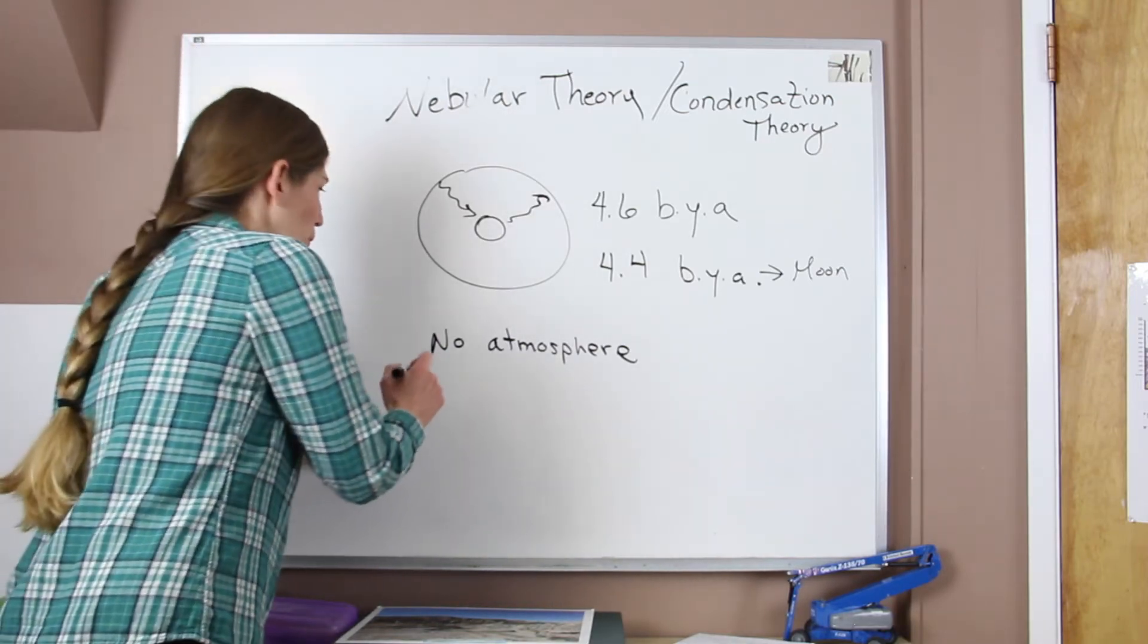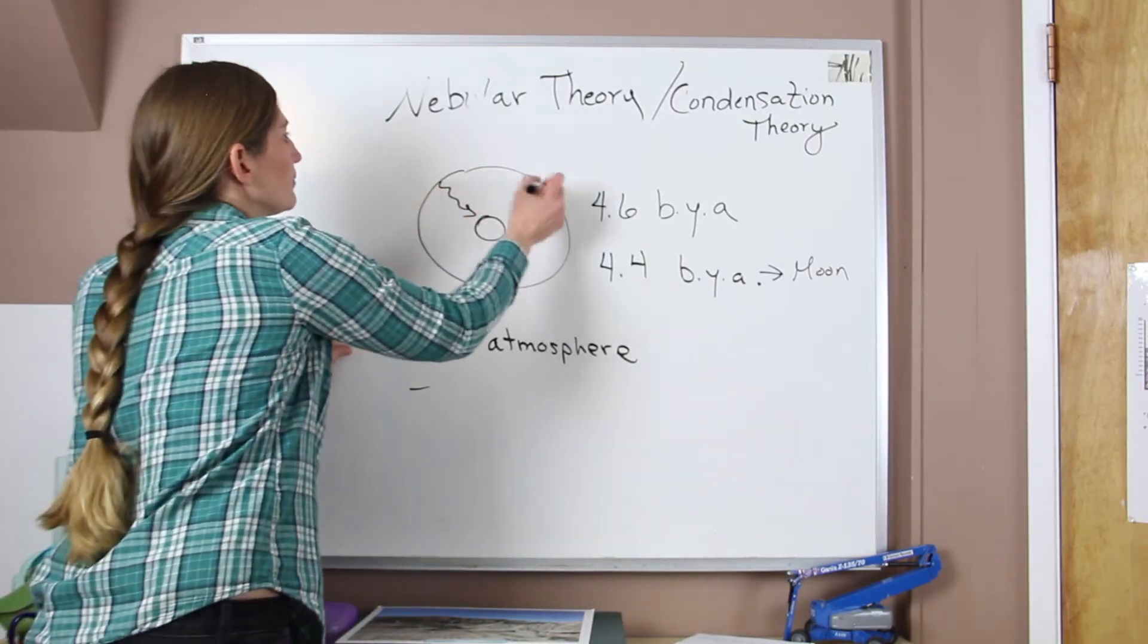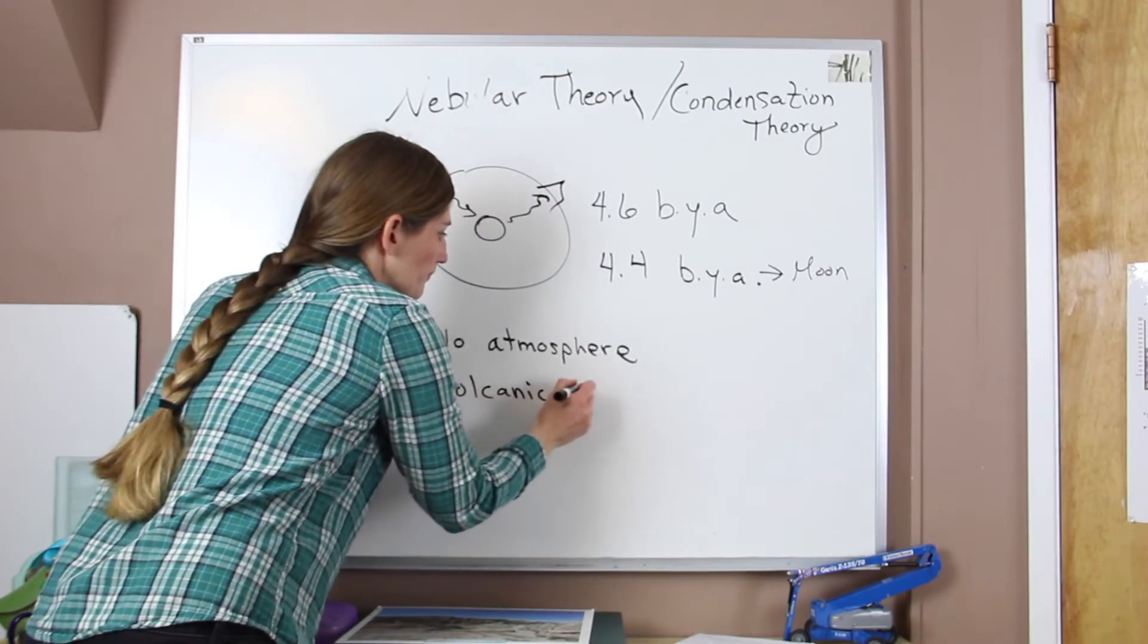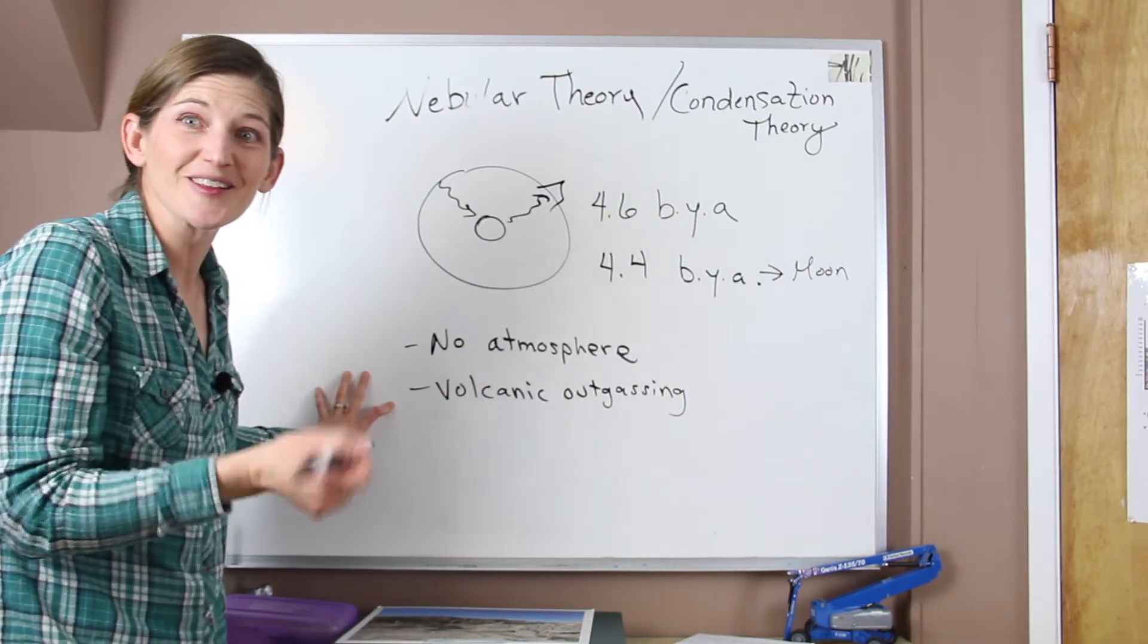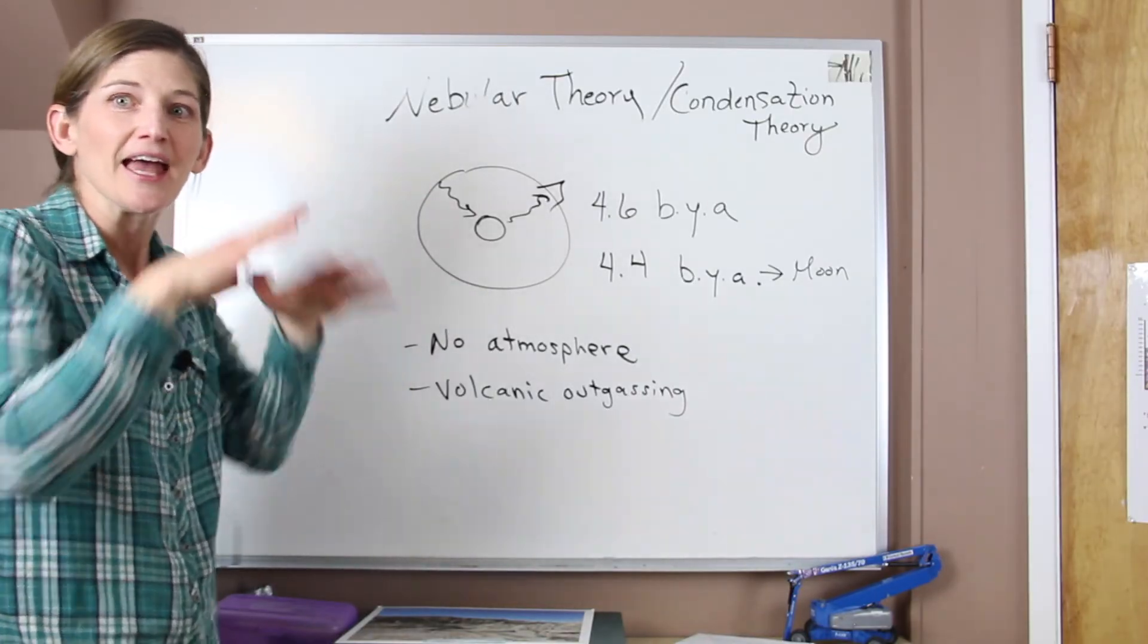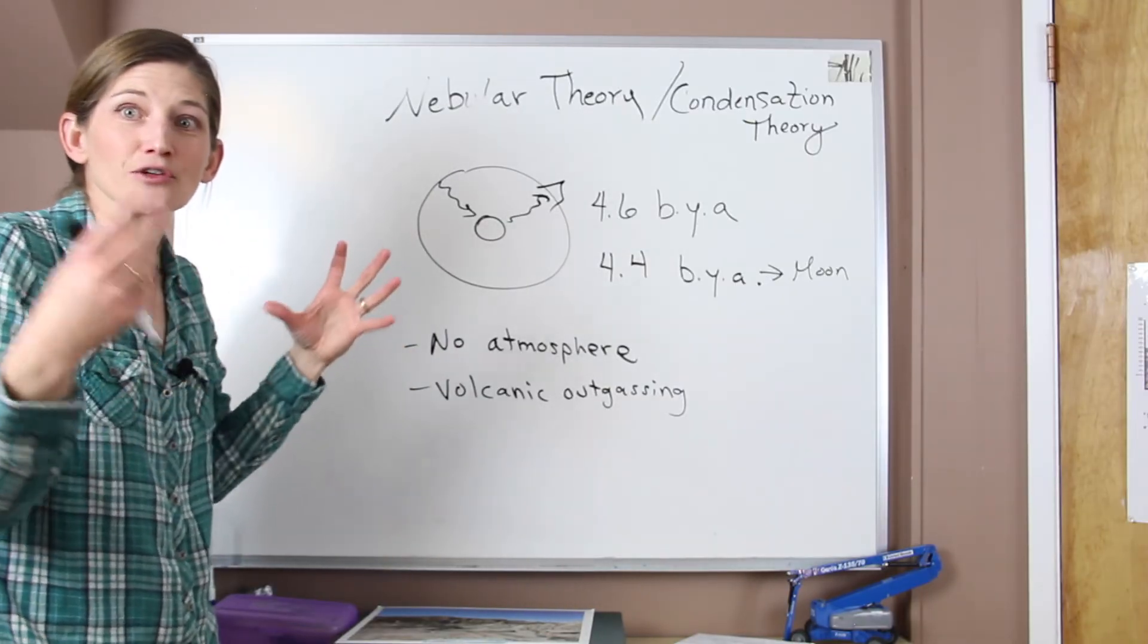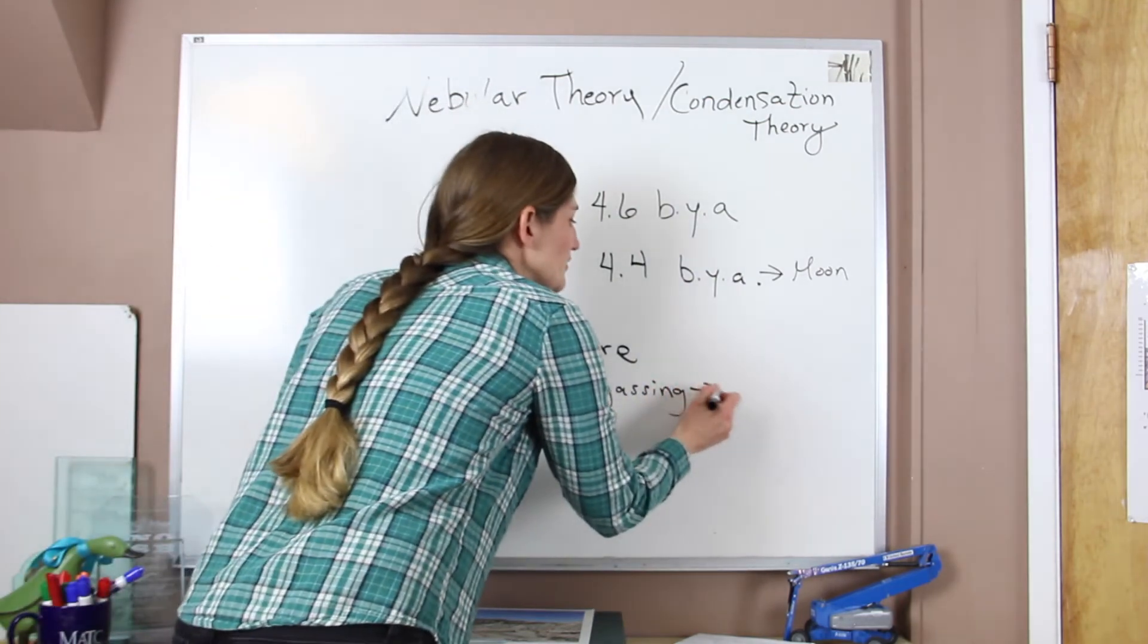When this whole process happened, we started to have, here, I'll kind of draw this out. So our volcanoes are going volcanic outgassing, which is sort of the burping of the earth created all of the different, or it allowed all these gases to escape. And eventually, as the sun cooled down and the solar winds weren't pushing all the material away, the earth's own gravitational field kept those gases present. We started to accumulate our atmosphere.